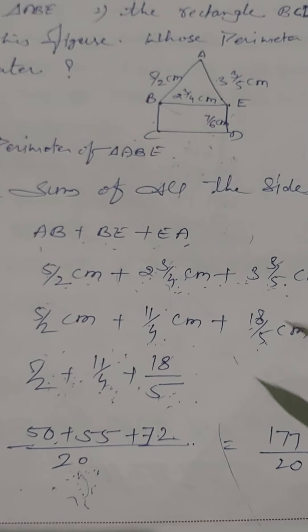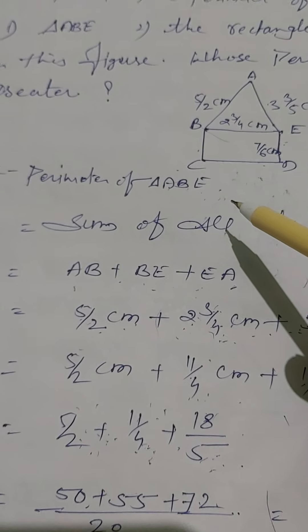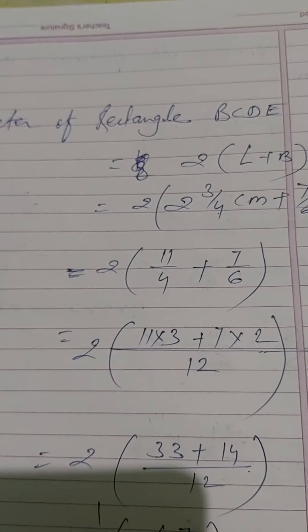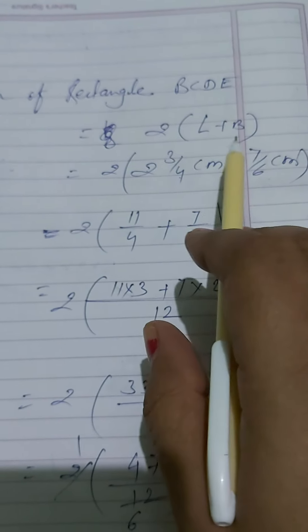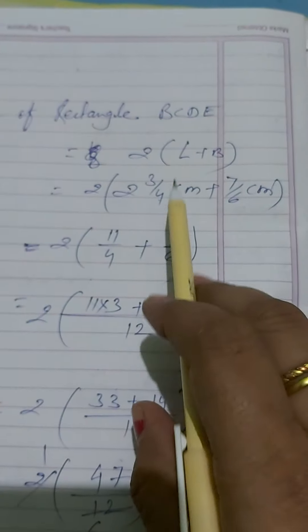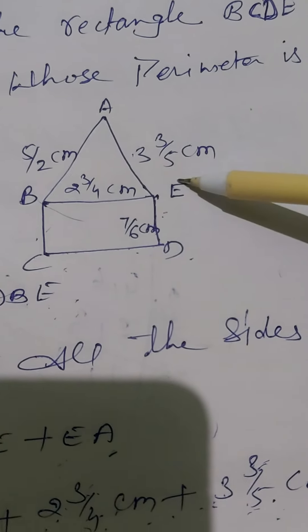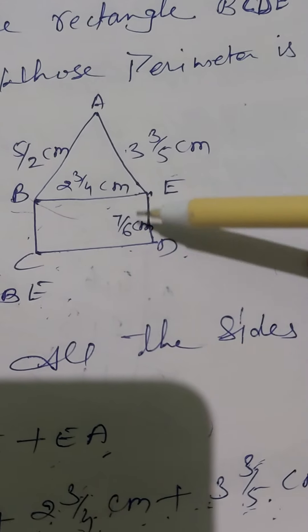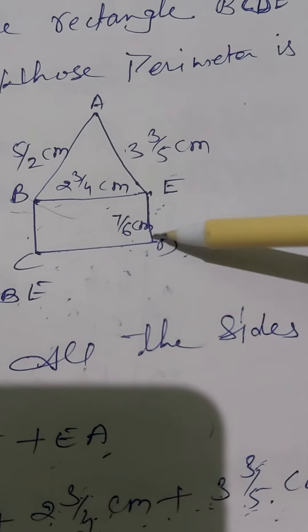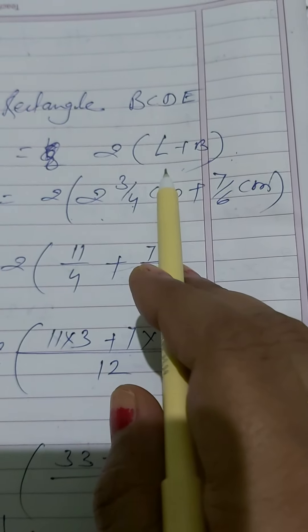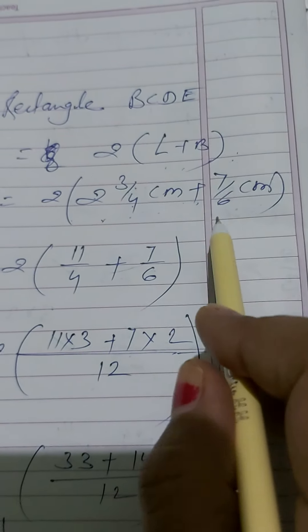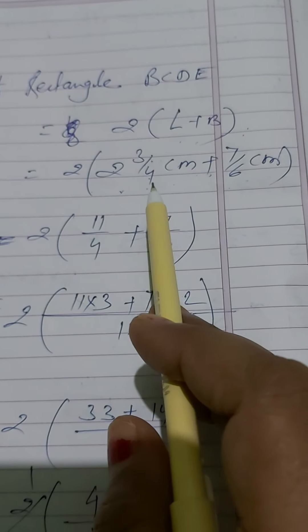Now we find the perimeter of rectangle BCDE using the formula 2 into (length + breadth). From the figure, the length is 2 and 3/4 cm and the breadth is 7/6 cm. Converting the mixed fraction: 2×4 = 8, plus 3 = 11, so length = 11/4 cm. We write: 2 into (11/4 + 7/6).